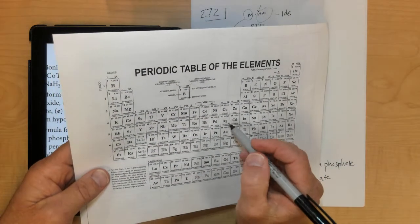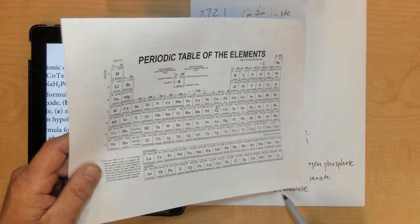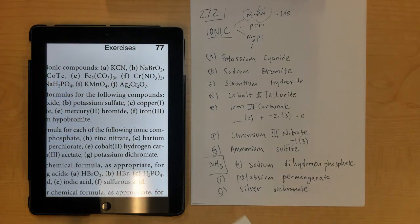So it could have a Roman numeral, but you know that silver is always positive 1, so you don't have to put a Roman numeral in there, but if you want to, you can. That is number 72.